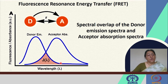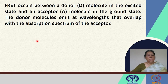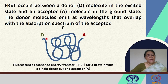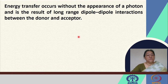The acceptor in turn can also fluoresce, shifted further to the red. FRET gives us a measure of the distance from the donor to the acceptor. FRET occurs between a donor molecule in the excited state and an acceptor molecule in the ground state, where the donor molecules emit at wavelengths that overlap with the absorption spectrum of the acceptor. We can tag our proteins with an acceptor and a donor and monitor folding, or monitor the distance at which they gradually approach each other as the protein folds. This energy transfer occurs without the appearance of a photon and is a result of long-range dipole-dipole interactions between the donor and the acceptor.